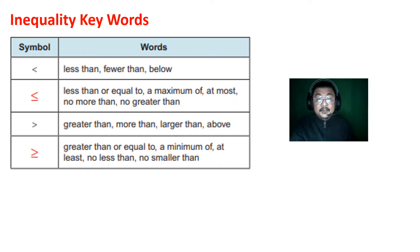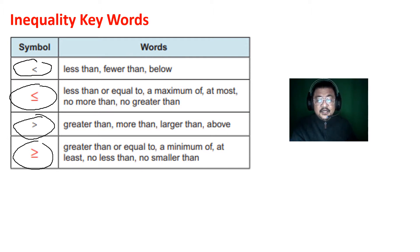Here we go. And remember, we talked about vocabulary before — remember the symbols and what they mean. Special highlight on the following words: the word 'maximum' or 'at most,' and the word 'minimum' or 'at least' — what symbol would each mean? Remember all of this.